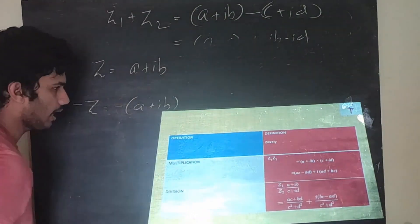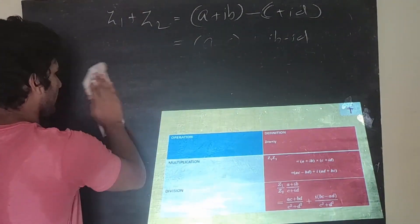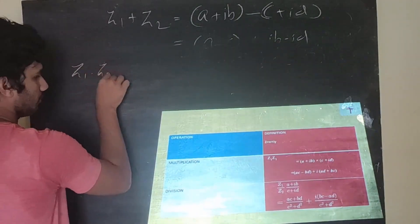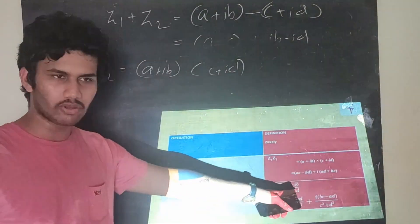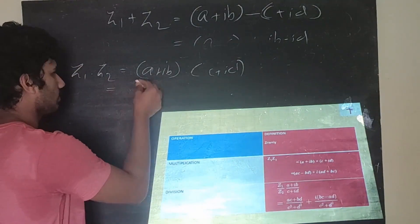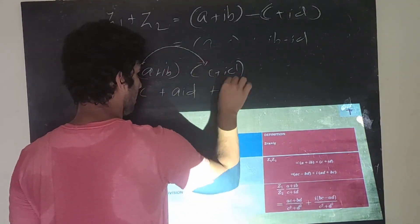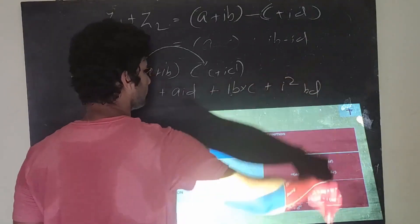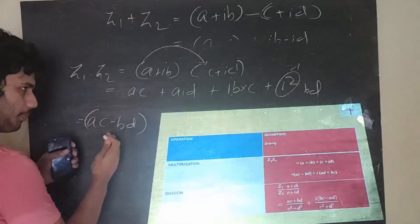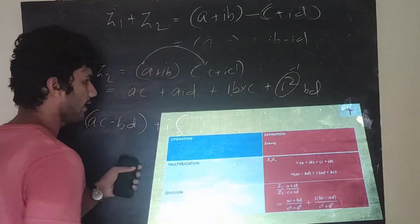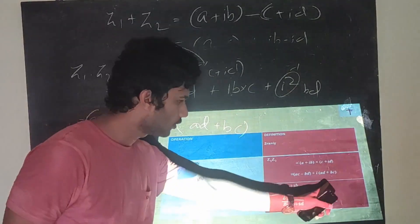Multiplication of two complex numbers: let z₁ = a + ib and z₂ = c + id. Multiplying out: ac + iad + ibc + i²bd = (ac − bd) + i(ad + bc), since i² = −1. The result is (ac − bd) + i(ad + bc). No need to memorize — just apply basic multiplication.